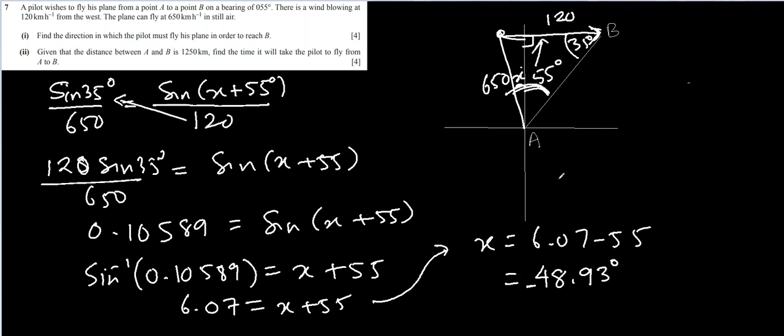Which means that the plane is not actually flying in this direction, it is flying in this direction at an angle of 48.9 degrees.